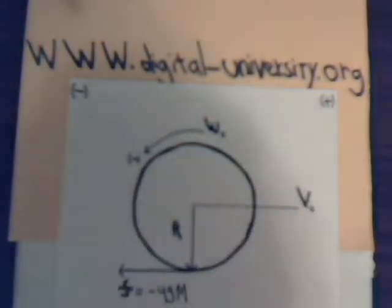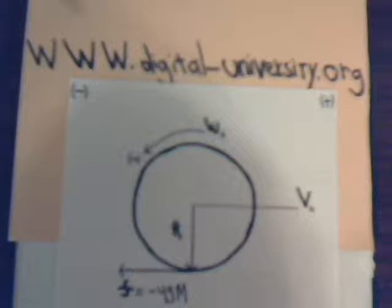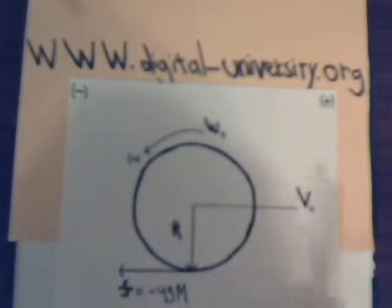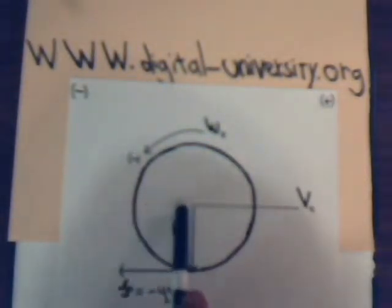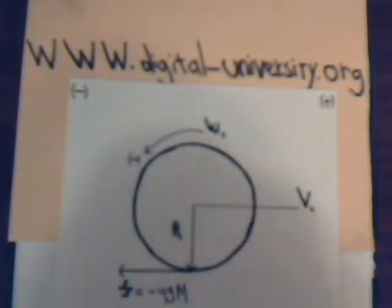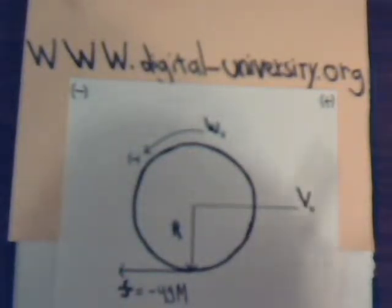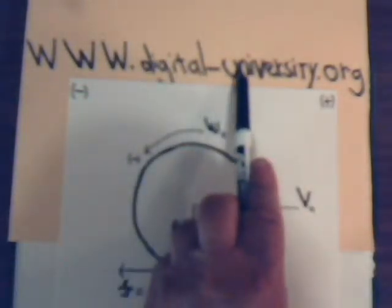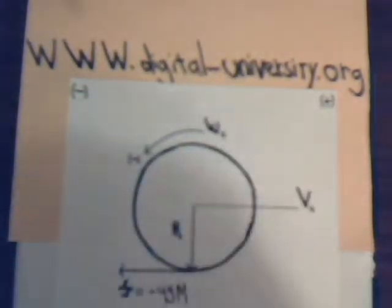This is video number 37 in our series, Analytical Mechanics. In the previous videos we have been discussing the motion of a billiard ball when it is hit either along the center line or on the top half. We went over that in quite a bit of detail — that was in videos 32 through 36. The playlist for all the videos is at the website digital-university.org.